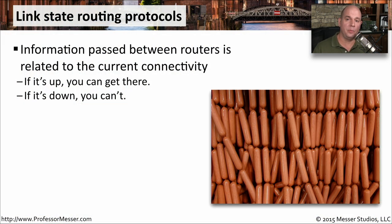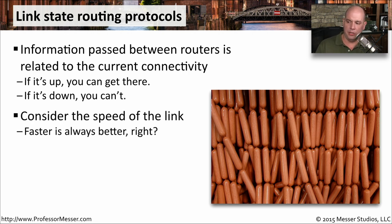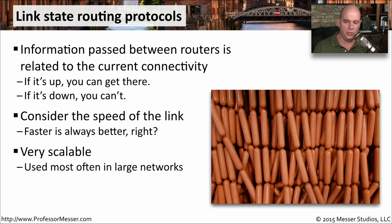A link state routing protocol is most concerned about the state of the link — is it up or is it down? It makes its routing decisions based on connectivity. If it's up, we can traverse this link and get to that location; if it's down, we can't. A link state routing protocol might also consider how fast the link is, so we can understand not just uptime and availability, but which route will be faster. This is pretty scalable and used a lot in very large networks. Routing decisions are made relatively quickly and simply, which makes it easy to calculate and troubleshoot.